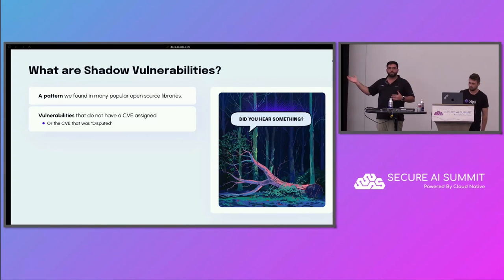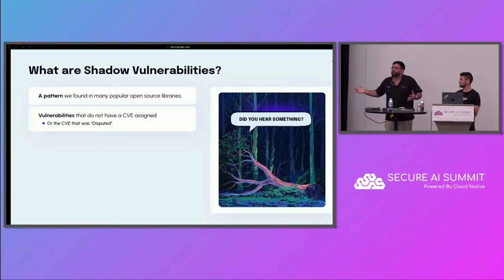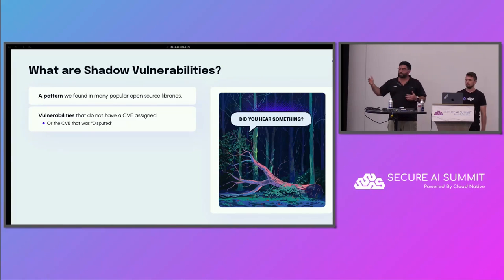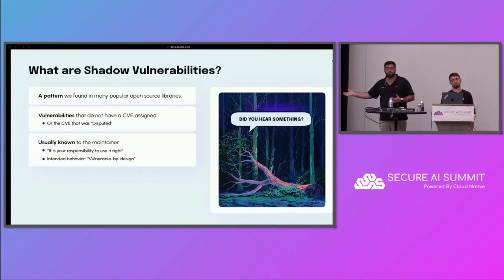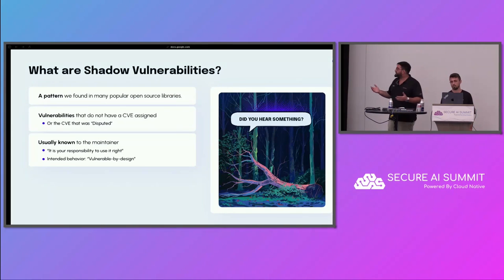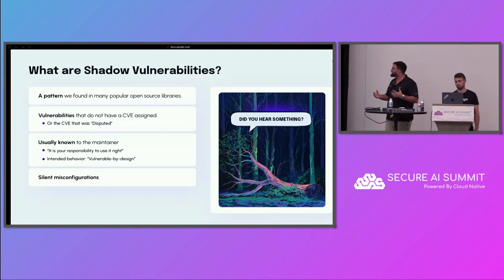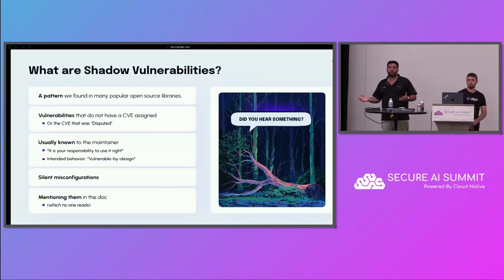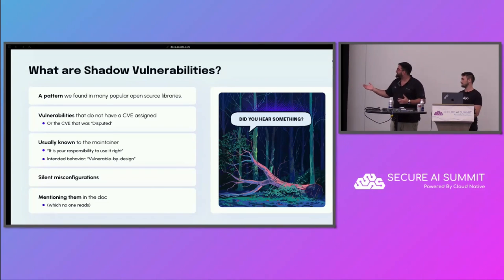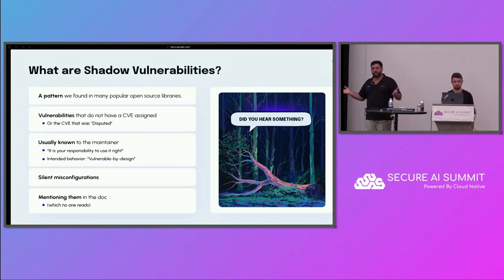You've probably heard the shadow term from other industries — shadow data for data you don't monitor, or shadow IT for workloads you don't monitor. Shadow vulnerabilities are those that don't get a CVE assigned. It can happen due to different reasons: a vulnerability in dispute where the maintainer won't fix it, developers not following best practices, or insecure-by-design libraries. All of these are silent misconfigurations that are very devastating, because security tools are not aware of them. We're scanning for CVEs, and if we don't have one, we're blind to that risk. All of these shadow vulnerabilities actually lurk inside documentation that no one ever reads.